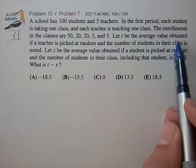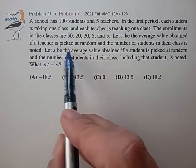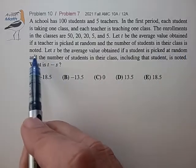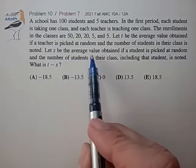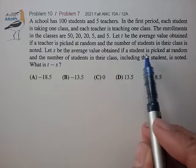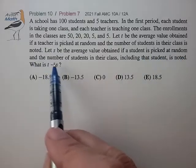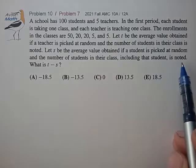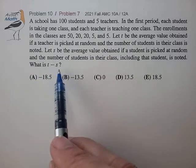Let T be the average obtained if a teacher is picked at random and the number of students in their class is noted, and let S be the average value obtained if a student is picked at random and the number of students in their class, including that student, is noted. What is T minus S?